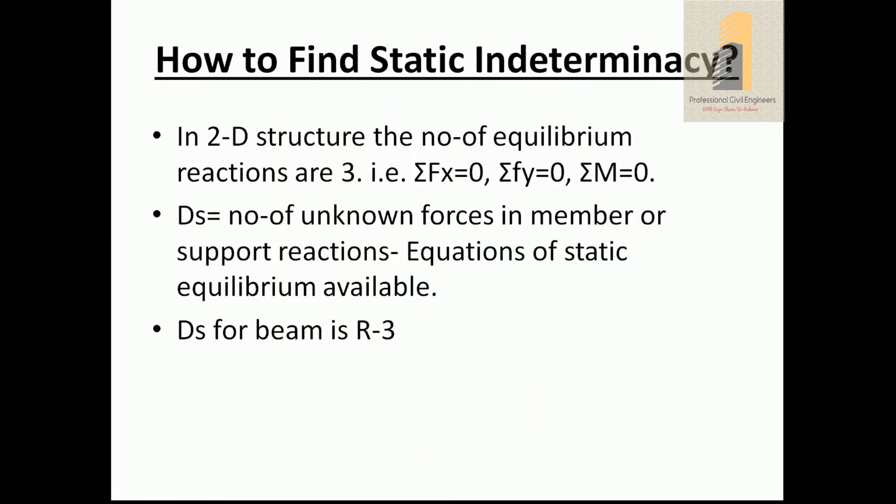Now, how to find static indeterminacy. For a 2D structure, the number of equilibrium equations are three: summation of Fx = 0, summation of Fy = 0, and summation of moment = 0. For a 3D or space structure, the number of equilibrium equations would be six. The formula is DS = R minus 3.